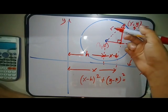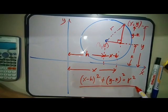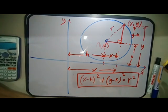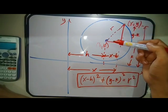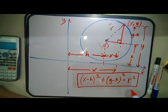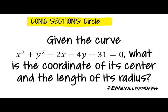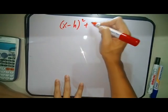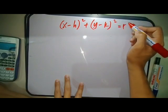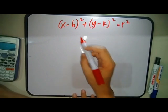Using the Pythagorean theorem: (x − h)² + (y − k)² = r². This is the standard equation of a circle, derived from the Pythagorean theorem. A circle is a locus of points that moves so that it is equidistant from a fixed point called the center, and that distance is the radius. Now let's solve a sample problem.